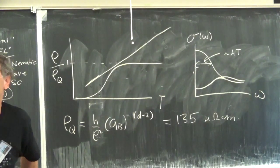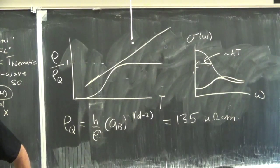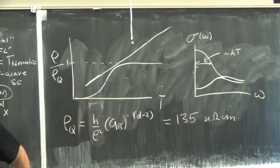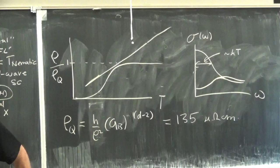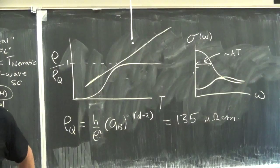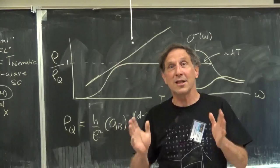Heavy fermions tend to be not quite linear — they'll go precisely as T to the 1.2 or T to the 1.3. The cuprates are kind of odd but they seem to go T-linear. But those power laws in heavy fermions are in a different regime of resistivity — much better conductors, much smaller magnitude of resistivity. They're strange, but not bad metals. By bad, I mean in the politically correct sense — resistively challenged.